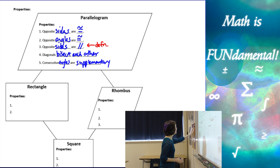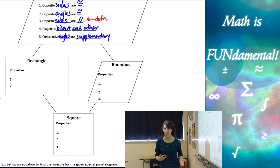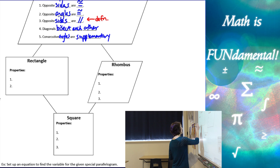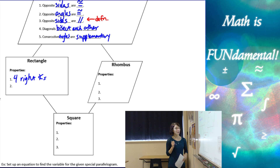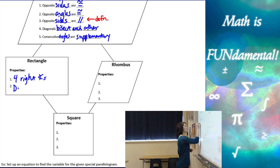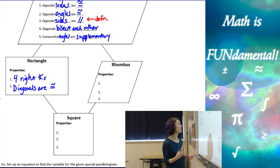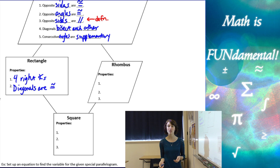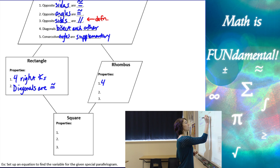The definition of a rectangle is four right angles, but rectangles have an additional property: the diagonals are congruent. So it's not only that they bisect each other — because rectangles are parallelograms — but in a rectangle the diagonals are also congruent.